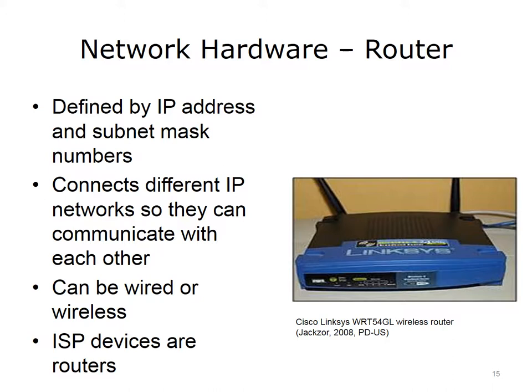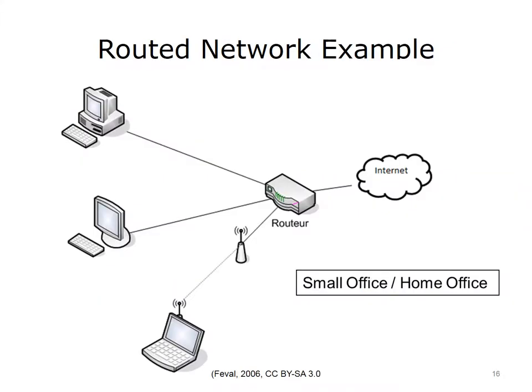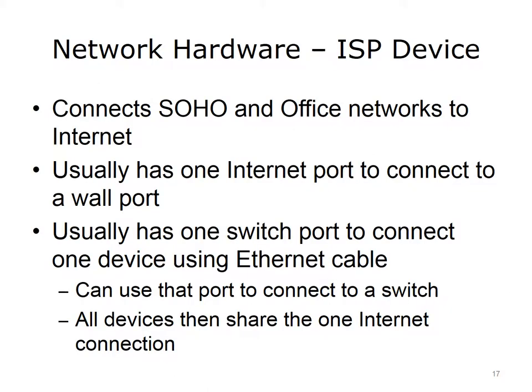This means that the communication does not reach its destination. This might happen in a small office network, but it should never happen in a business network or on the Internet. This image shows a small office network interconnected by an ISP router with switch ports. The ISP router connects the devices in the small home office to the Internet. Assuming correct IP addressing, the three home devices can communicate with each other and the Internet. An ISP device, for example a cable modem router, connects either a home or an office network to the Internet. Users can lease these pieces of hardware from their ISP when they sign up for Internet service.